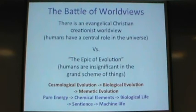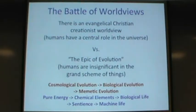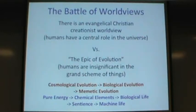Looking at the past: pure energy went to chemical elements, to biological life, to sentience — humans have the most advanced brains. Now we are creating robots and computers. Think about what technology will be like in the next 100 years, the next 1,000, or the next million years. We could be on Earth for 100 million years. A Christian might think Jesus is coming tomorrow, but if you have a scientific view, we might be here for another 100 million years — think what computers will be like a million years from now.